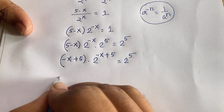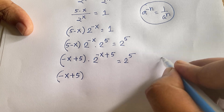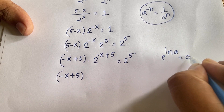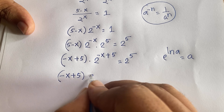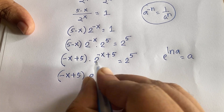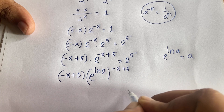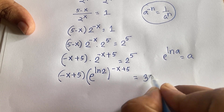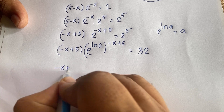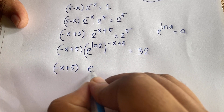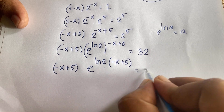Now I can write (minus x plus 5) times 2 to the power of (minus x plus 5). According to exponential rules, we know that e to the power of ln(a) equals a. So I convert 2 to e to the power of ln 2. Therefore (minus x plus 5) times e to the power of ln 2 times (minus x plus 5) is equal to 32.